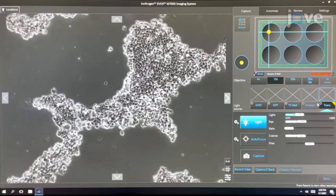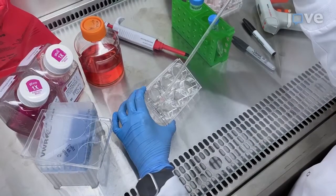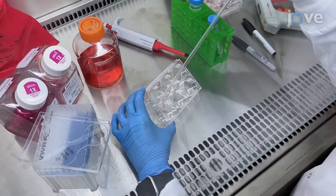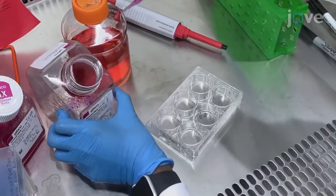After confirming rounded cell colony edges under a tissue culture microscope, quickly aspirate the cell detachment solution and gently rinse the cells with cell culture medium.